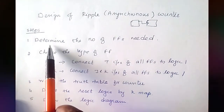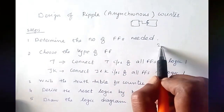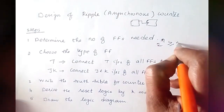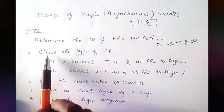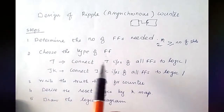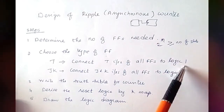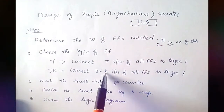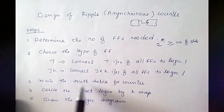These are the steps to design the ripple counter. The first step is to determine the number of flip-flops needed, satisfying the condition 2 power n greater than or equal to the number of states. The next step is to choose the type of flip-flop. If we select a T flip-flop, we connect all inputs to logic 1. If we select a JK flip-flop, we connect all JK inputs of all flip-flops to logic 1.